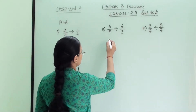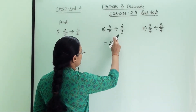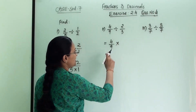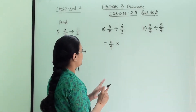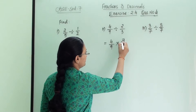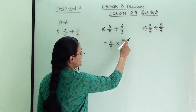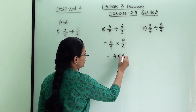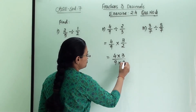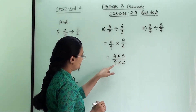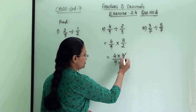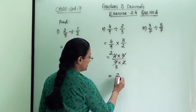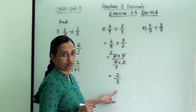The second one is 4 by 9 in division with 2 by 3. We convert the division sign into multiplication and write the reciprocal of the second number. The reciprocal of 2 by 3 is 3 by 2. Now we write 4 into 3 in division with 9 into 2. We can reduce: 3 into 9 and 2 into 4, giving us the answer 2 by 3, which is a proper fraction.